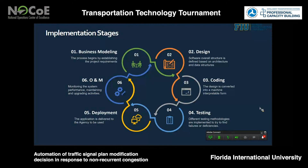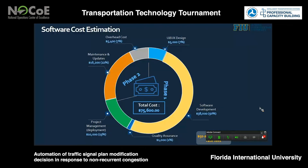As of today, we have already completed three steps of phase one: the business model, the design, and the coding. However, due to the COVID-19 situation, we have experienced some delay moving to the quality assurance step and completing phase one. Regarding cost estimation, phase one has a total cost of $54,000, with $38,000 allocated to software coding, representing about 50% of the total project cost. Phase two has a cost of $21,600, including overhead costs. This gives a total cost of $75,600 for the entire project, based on a $50 average hourly rate for coding development.